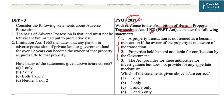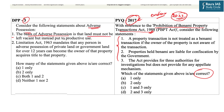In that question three statements were given and you had to find the correct one. Even in 2023 prelims, questions have been asked from certain acts and laws — for example, the Evidence Act. In this relation we have framed DPP question number three. Consider the following statements about adverse possession. Statement one says the basis of adverse possession is that land must not be left vacant but instead put to productive use.